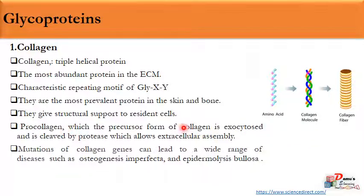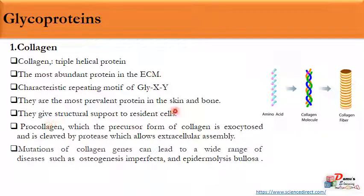Collagen is usually secreted as an inactive form called procollagen, which is then exocytosed by the cell. Once outside the cell, it is cleaved by proteins and becomes active. This mechanism of secreting an inactive form ensures that these protein molecules are only activated when and where required. Mutations in collagen genes can lead to a wide range of diseases, such as osteogenesis imperfecta and other bone and skin-related disorders.